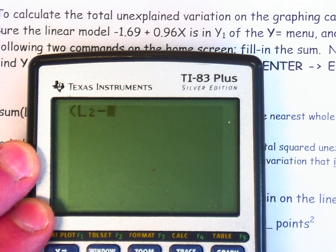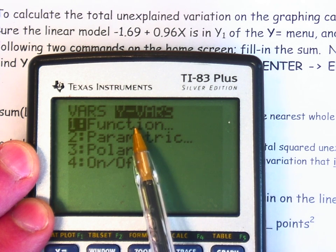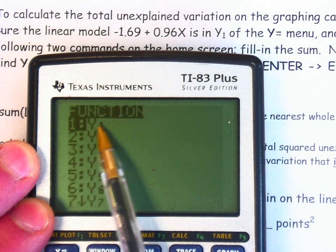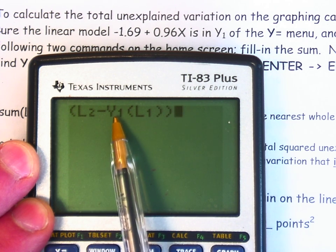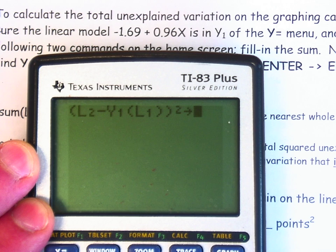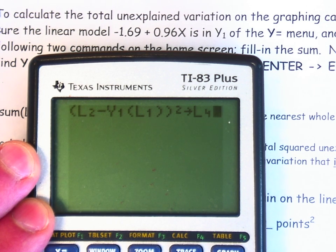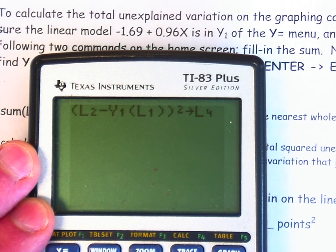So to do that, I need to call up the equation in y one. That is the variables button. Y variables, we want to go into the function menu, press enter. And y one is the function where I stored my linear model. And into that model, I want to put the explanatory values in list one. These are the actual y values. These are the predicted y values. The difference is the residual. I will square that. I will store that into list four. This will give you the square points that are not explained, the amount of variability that is not explained by this model. And you'll know you're correct if you're just a little bit under a thousand squared points.